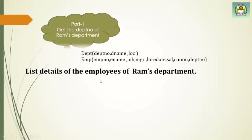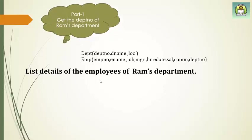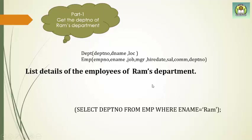First part: we have to find the department number of RAM's department. The inner query will be: SELECT department number FROM EMP WHERE ename equals RAM. This gives us RAM's department number.